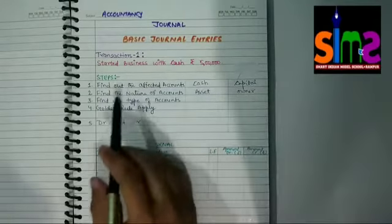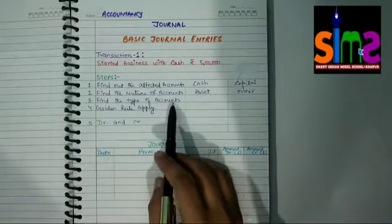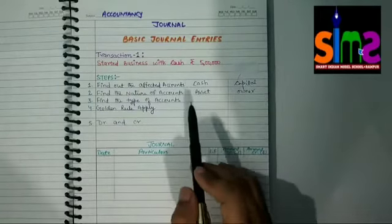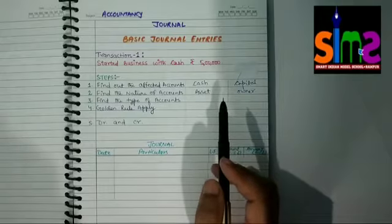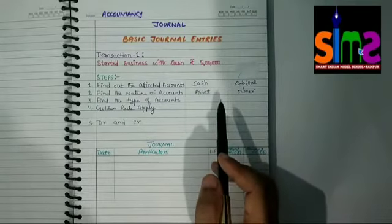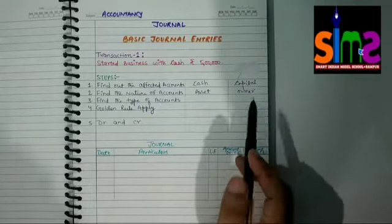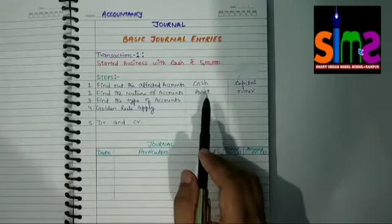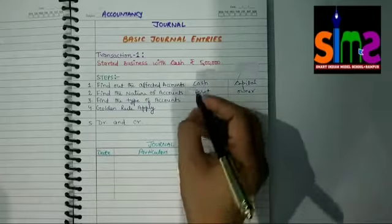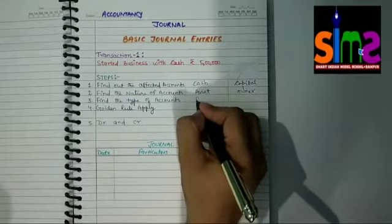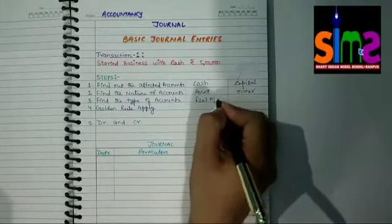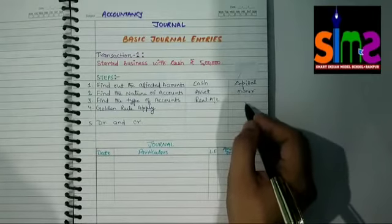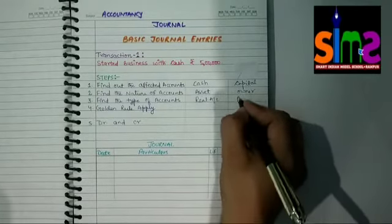The third step is to find the type of account — under which type of account cash and capital fall, whether real account, personal account, or nominal account. Cash comes under the category of real account because it is an asset. And owner or capital comes under the category of personal account.